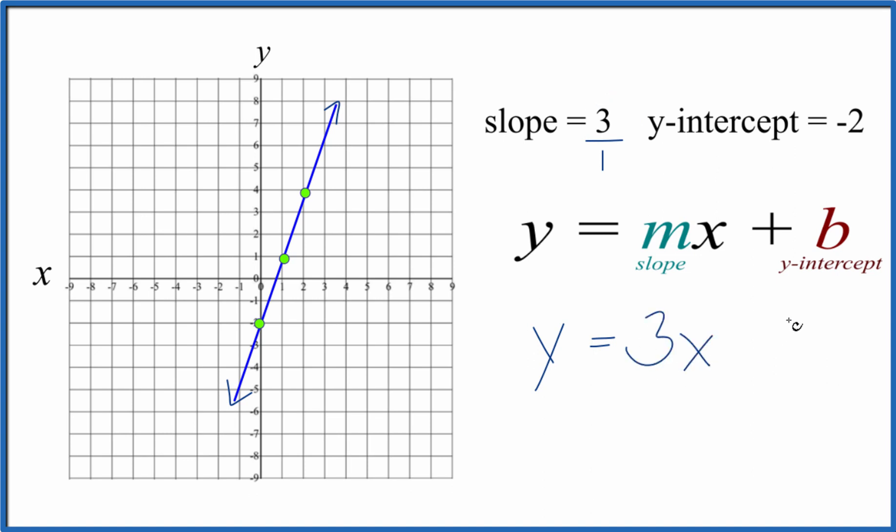Put an x there. Plus b. So b, the y-intercept, is negative 2. So we're going to say minus 2. The equation for slope 3, y-intercept negative 2 is y equals 3x minus 2. And this is our graph.